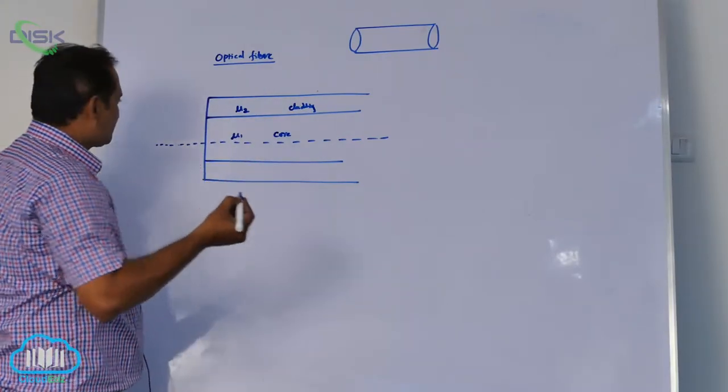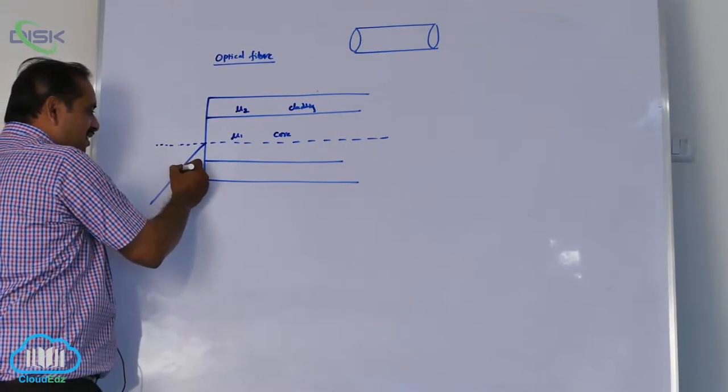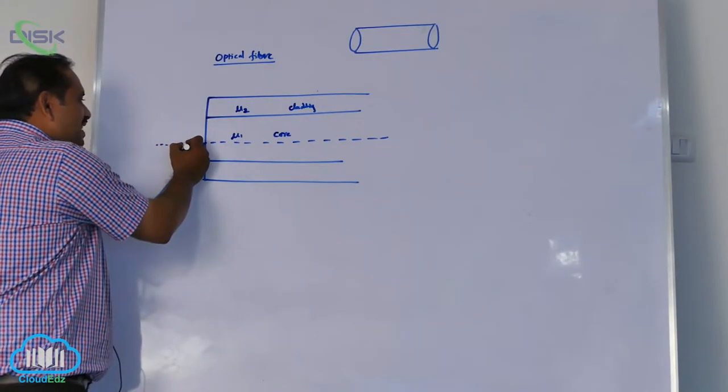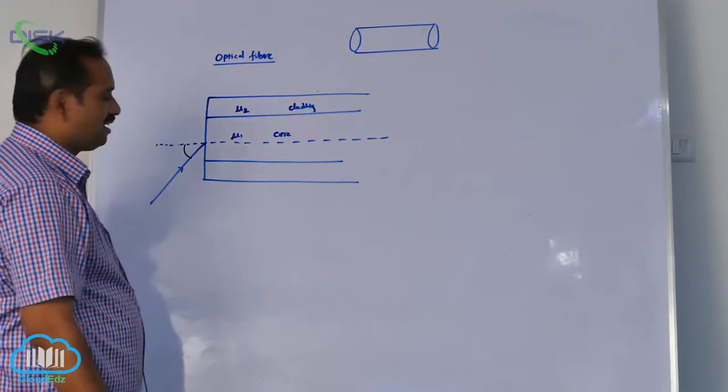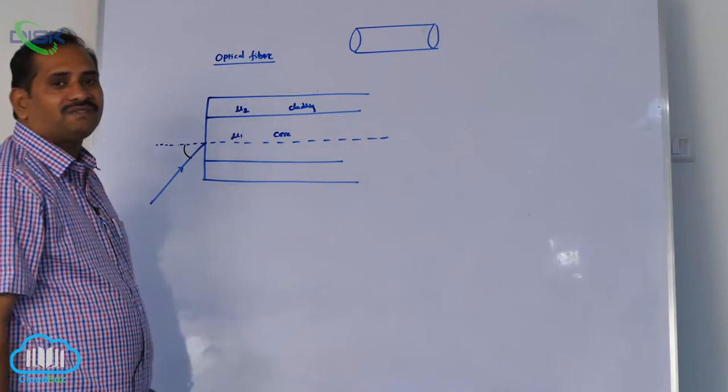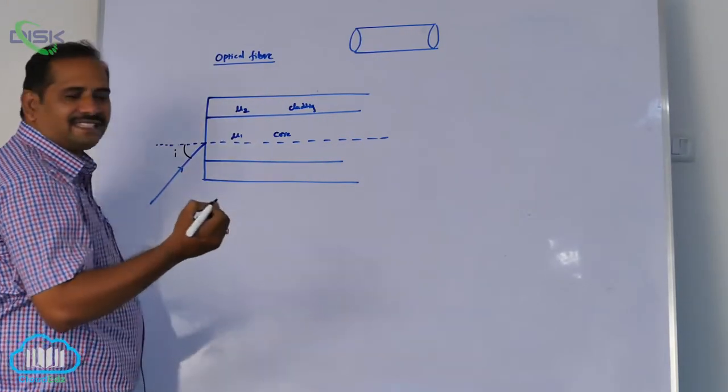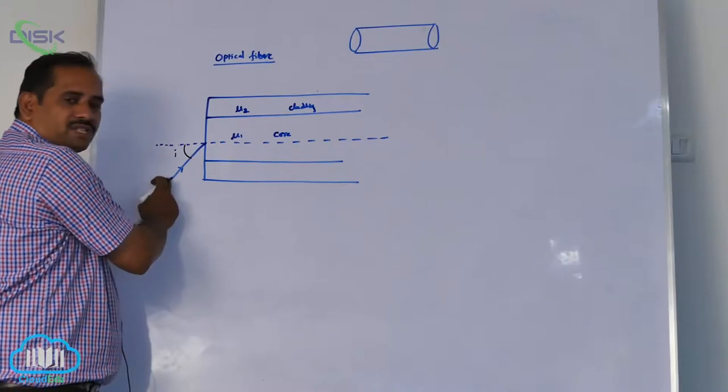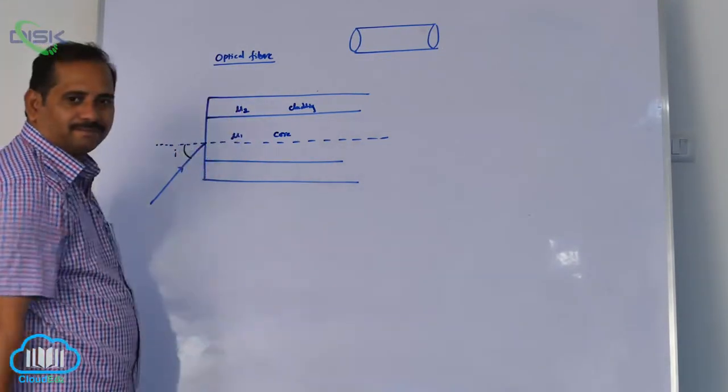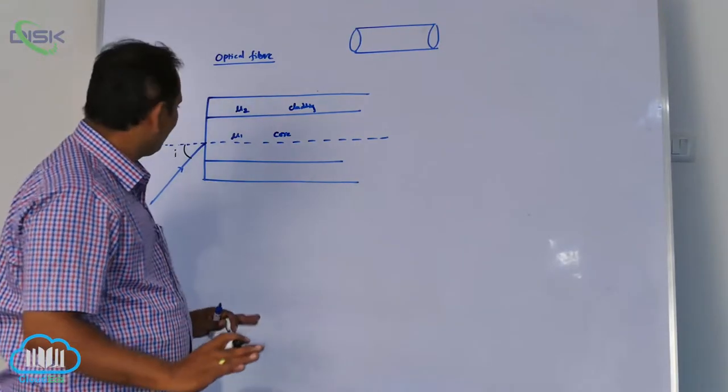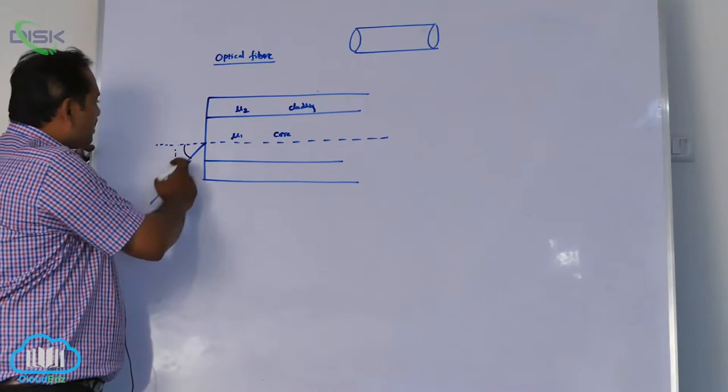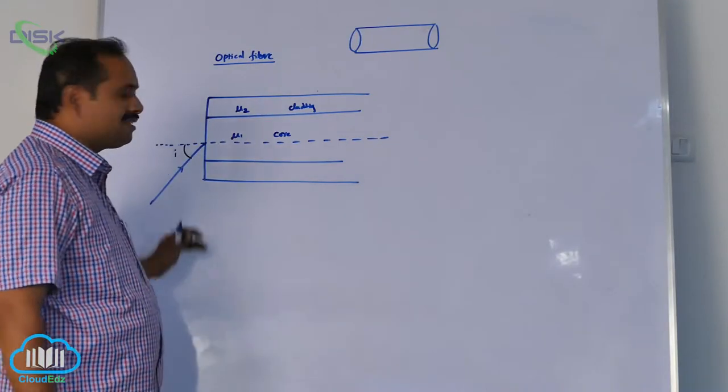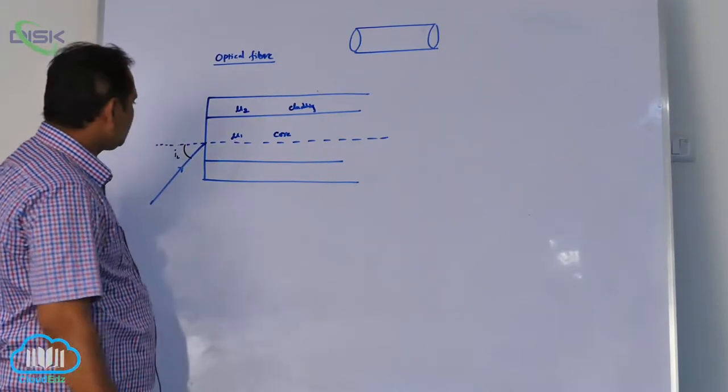How does the fiber work? Light is incident on one of the refracting surfaces like this. Here, I am going to define glancing angle. Glancing angle is that angle at which maximum portion of the incident light enters into the fiber. Light is incident on the fiber in such a way that the maximum portion of light enters into the fiber. That angle of incidence is called glancing angle.